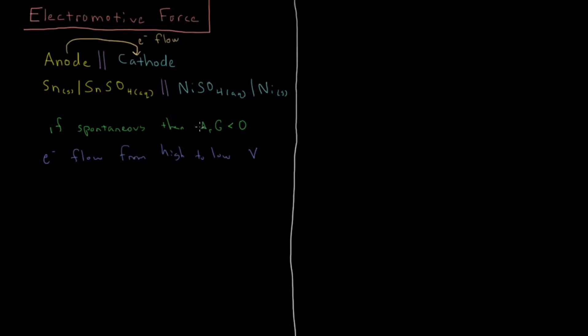Just like particles flow from regions of high to low chemical potential, electrons flow from regions of high to low electrical potential. Electrical potential is measured in volts, which is joules per coulomb. We can think that these must be connected in some way, because it's spontaneous for electrons to go from high to low voltage and it's spontaneous for a reaction to go from high to low Gibbs energy.